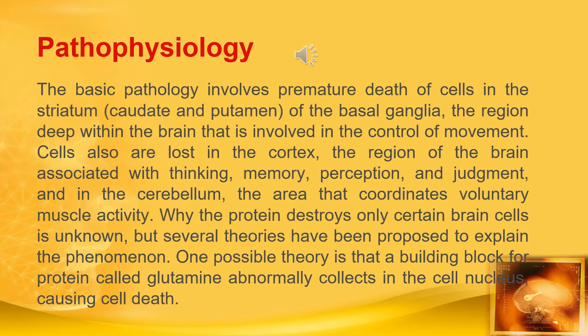Now let's discuss pathophysiology. The basic pathology involves premature death of cells in the striatum of the basal ganglia, the region deep within the brain involved in control of movement. Cells are also lost in the cortex — the region of the brain associated with thinking, memory, perception, and judgment — and in the cerebellum, the area that coordinates voluntary muscle activity.